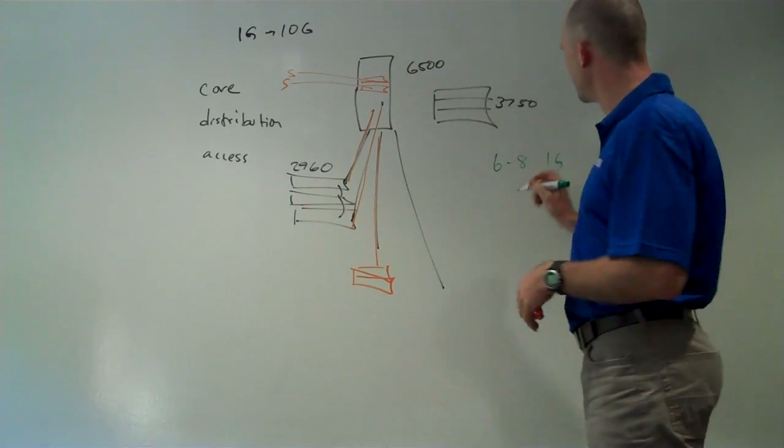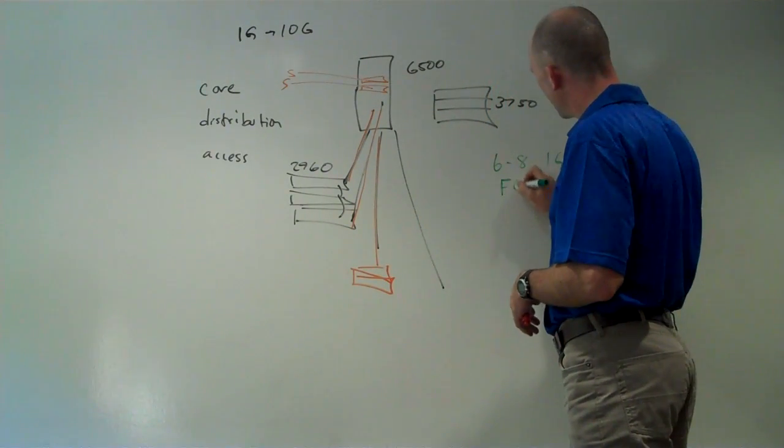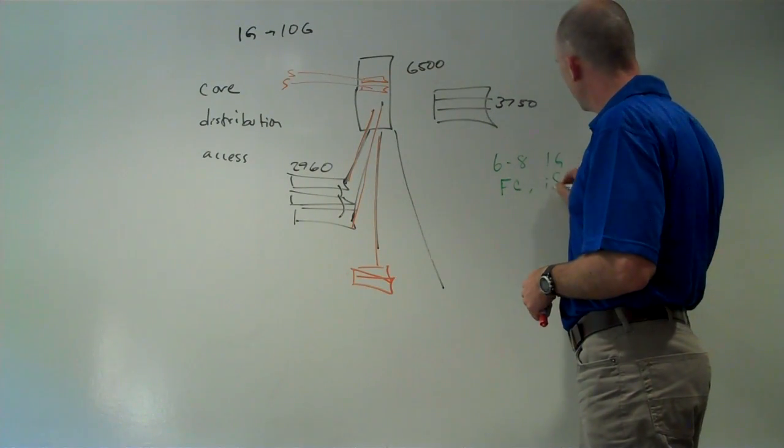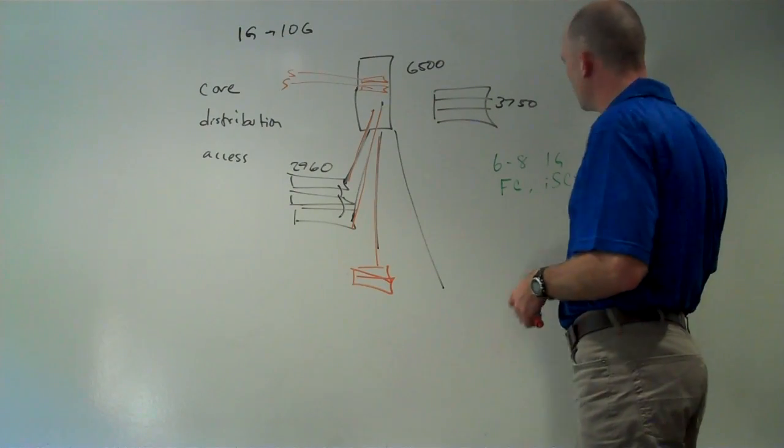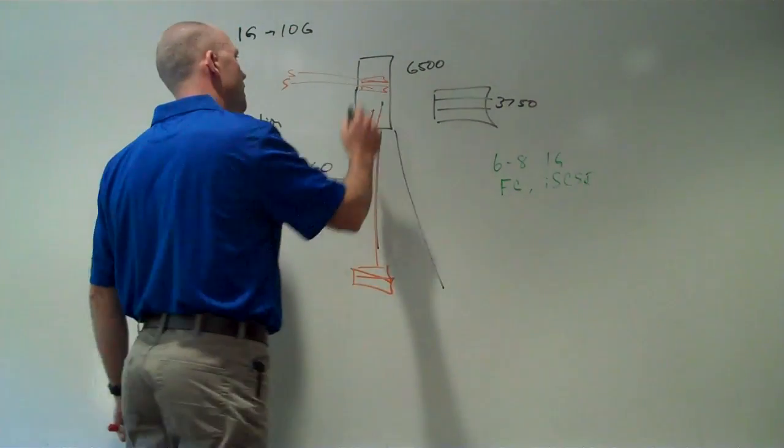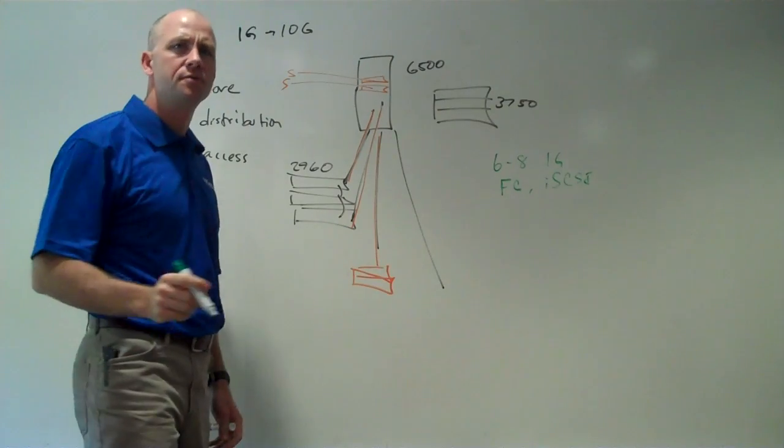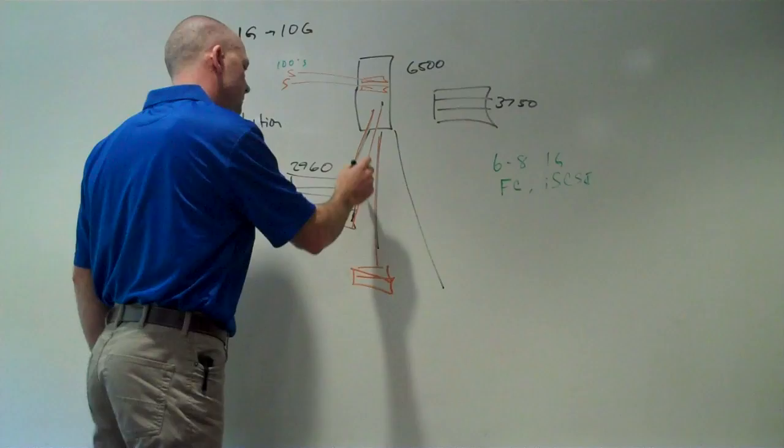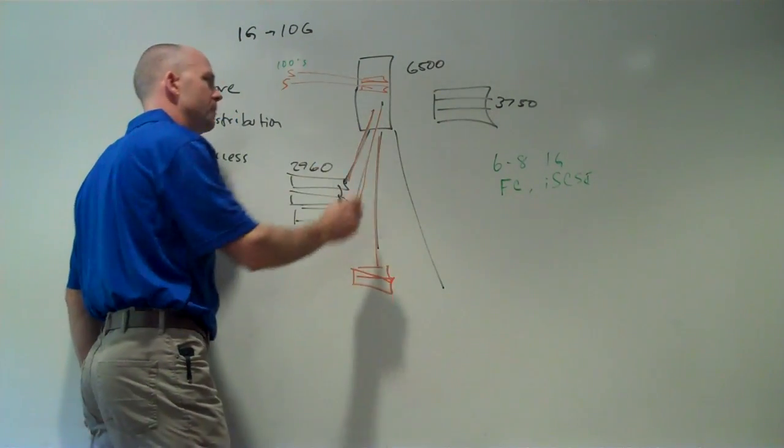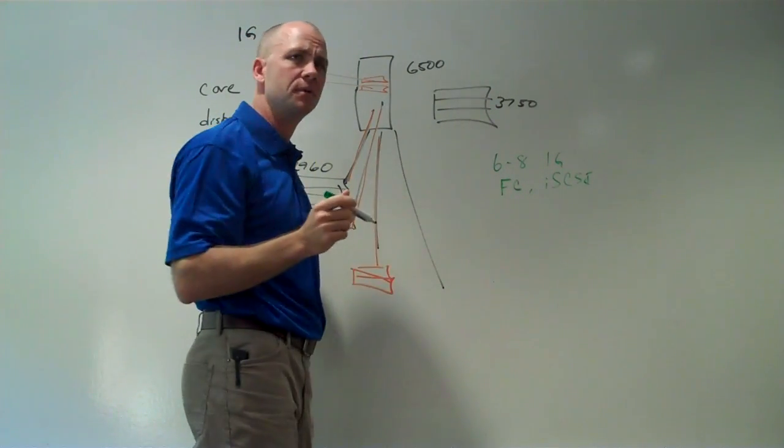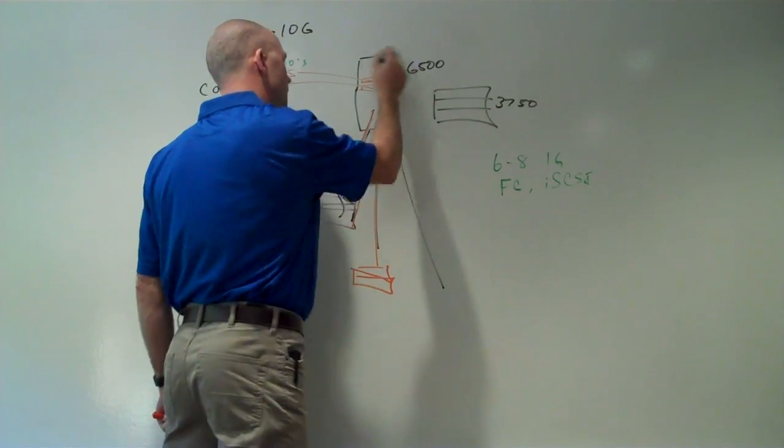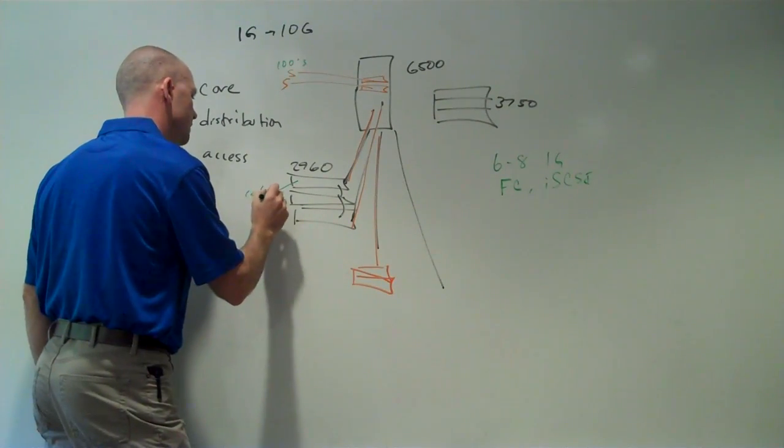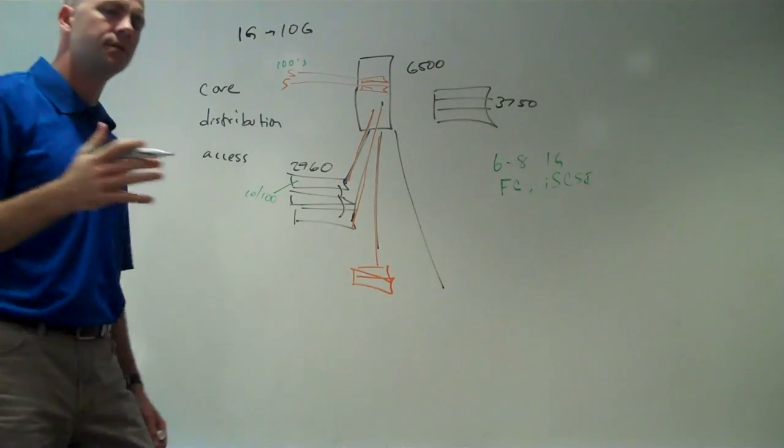And some of them will have storage access. For example, either fiber channel storage access or iSCSI storage access. So what we're going from is a situation where we have probably hundreds of gig connections for servers. And then many uplink, either copper or fiber gigabit uplinks into this collapsed core distribution switch. And then typically 10/100 connections out to the desktops.